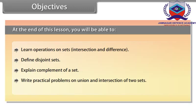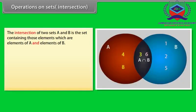Operations on sets — Intersection. The intersection of two sets A and B is the set containing those elements which are elements of A and elements of B. We use this symbol for intersection.